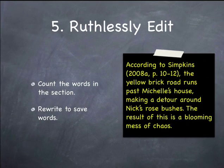It's likely you'll discover your section is too long — more than the 152, 287, or 387 words, or whatever the limit is for that section — because I told you to write fully to begin with. So count the number of words in the section and rewrite to save words. I'm suggesting rewriting first, not cutting ideas out. Keep all the ideas you have and see if you can rewrite to eliminate the excess words. Here again is my sample: 'According to Simpkins, 2008A, page 10 to 12, the yellow brick road runs past Michelle's house, making a detour around Nick's rose bushes.'